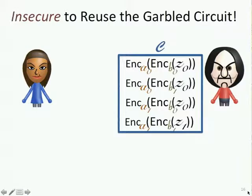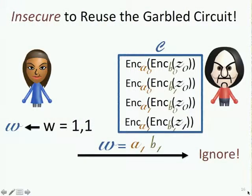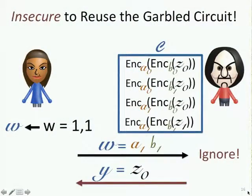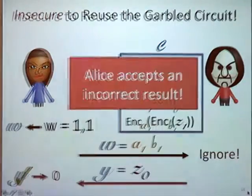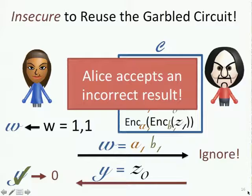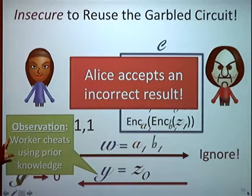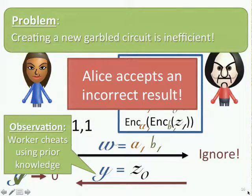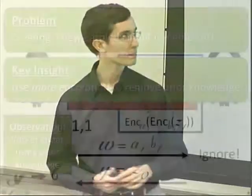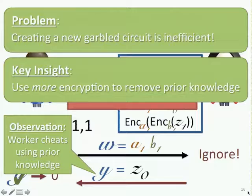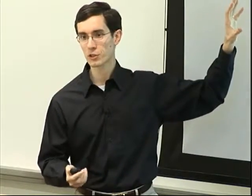There's a problem: it's insecure to reuse these circuits. If Alice chooses a new input, say 1,1, the worker can simply ignore what he was given and send back exactly what he returned last time. Alice will see it's a legitimate output wire label value, but it's the wrong one—she's tricked into accepting a zero when it should have been a one. The only reason he can cheat is because he's recycling old knowledge from the first round. We can't just throw away the circuit and compute a new one, because that's as expensive as doing the computation yourself. What we need is some manner of recycling the circuit so we can use it over and over again.